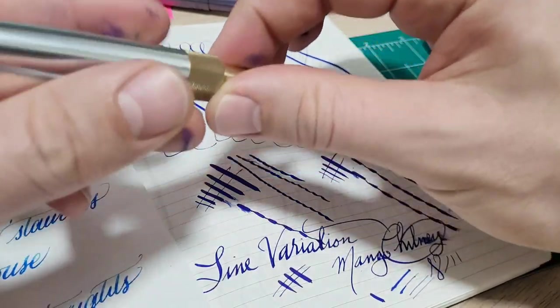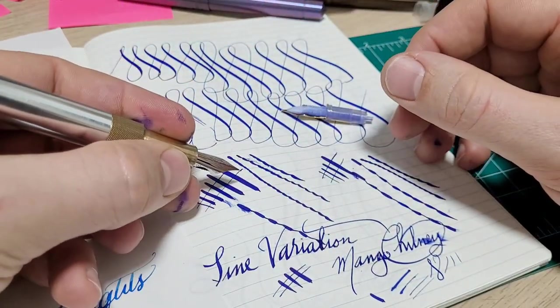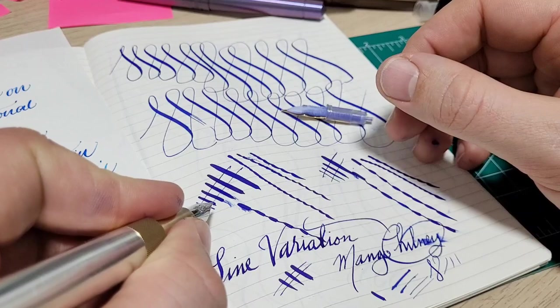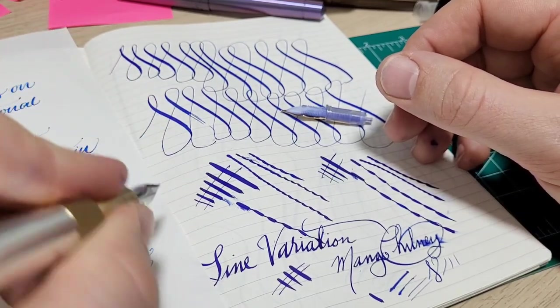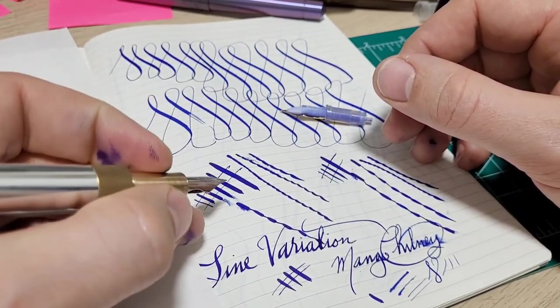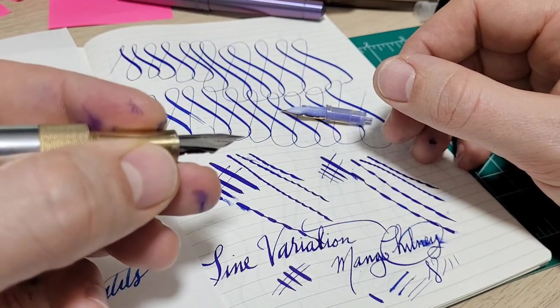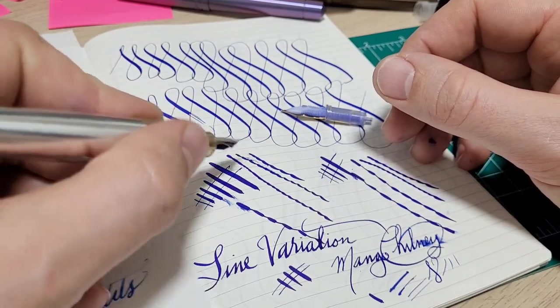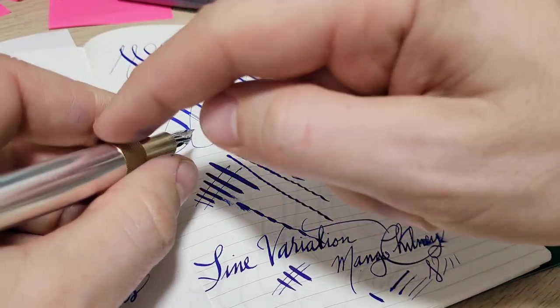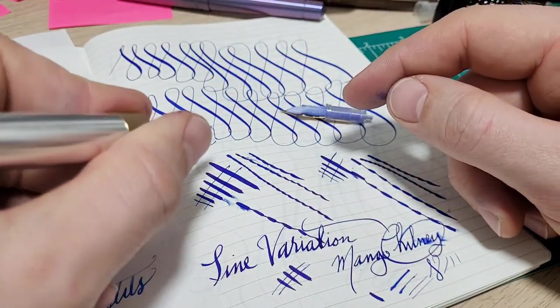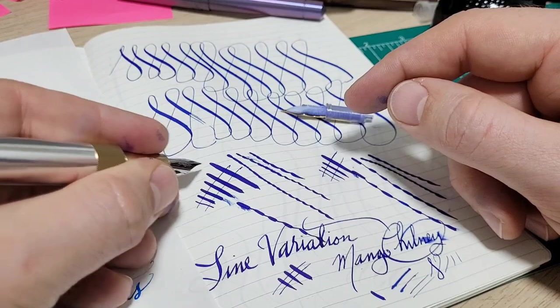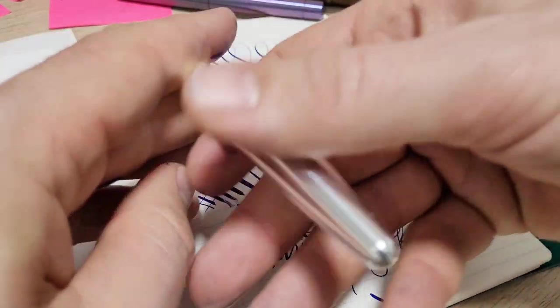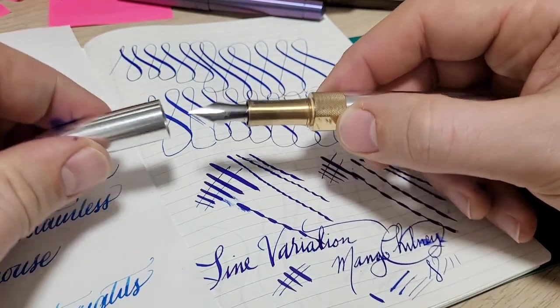I have no idea how a lefty holds their pen, but you can, whatever way you do, you can hold it in the grip section. But if you wanted to hold it further back again, depending how you hold it, you know your index finger I guess would rest on there, but maybe it's not going to suit you as much as a right-hander. So just something to be aware of.